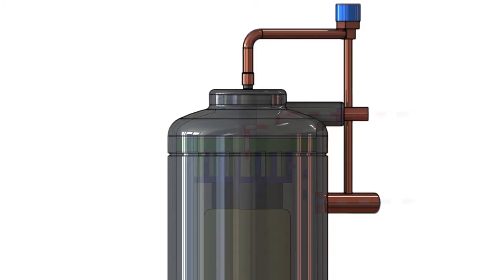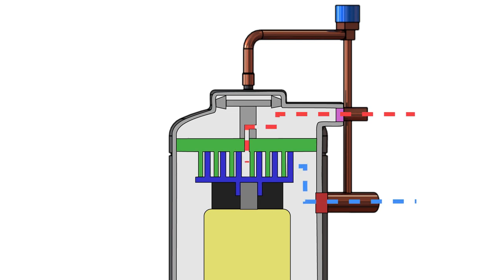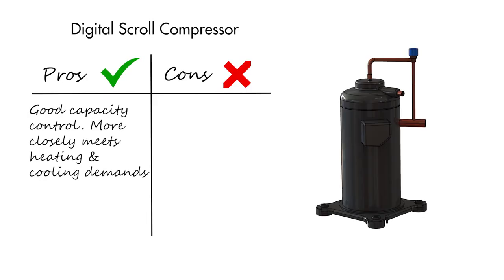So in summary, the digital scroll compressor uses some pretty clever mechanical engineering to allow for more precise indoor climate control. But it isn't the best option in terms of energy efficiency.